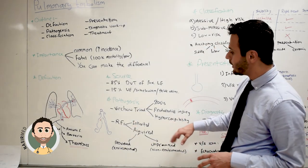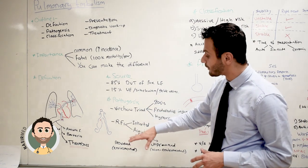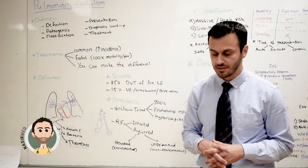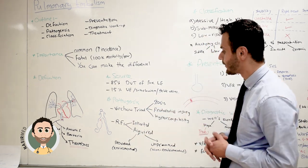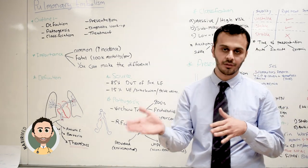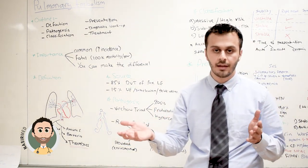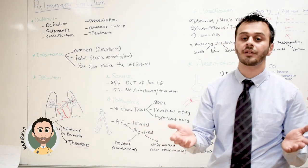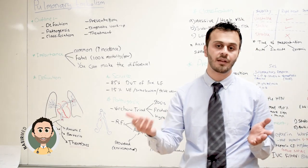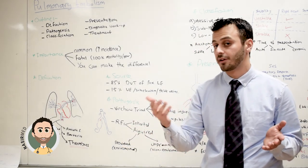Now, moving on to the risk factors of pulmonary embolism. I'd like to divide them into two: inherited and acquired. Inherited risk factors include diseases such as Factor V Leiden, antithrombin deficiency, and protein C and S deficiency.